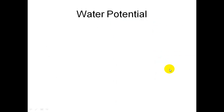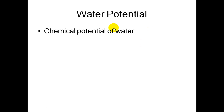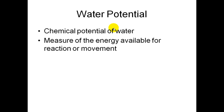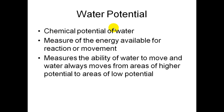The last concept is water potential, relevant to AP Lab 1 on diffusion and osmosis. Water potential is the chemical potential of water — it is the measure of the energy available for the movement of water to take place, or the ability of water to move. Water always moves from areas of high potential to areas of low potential.